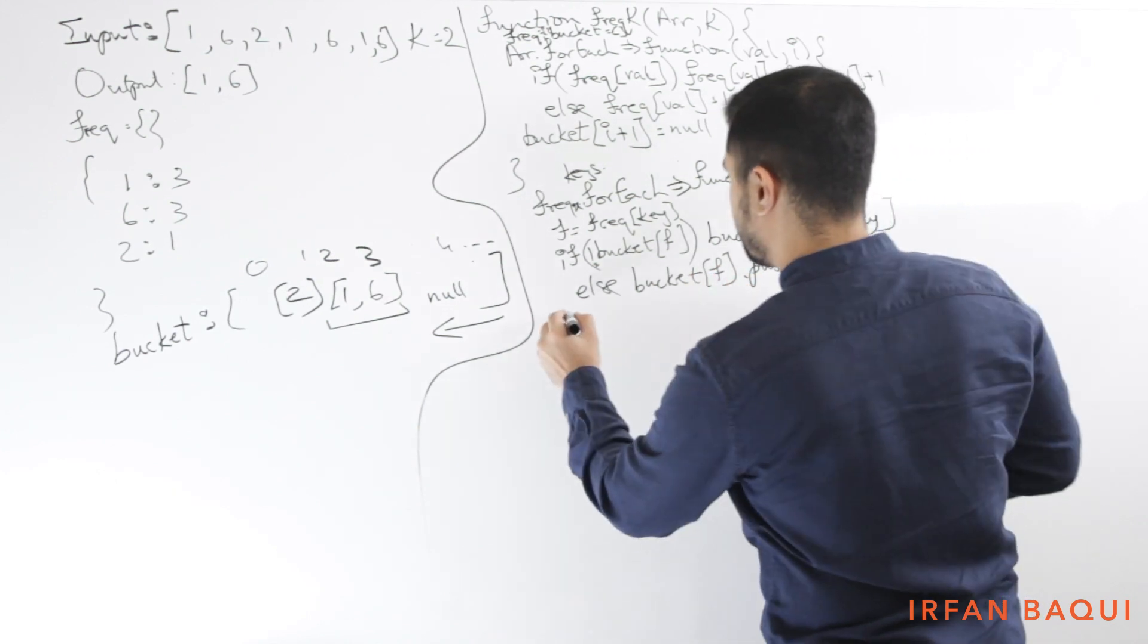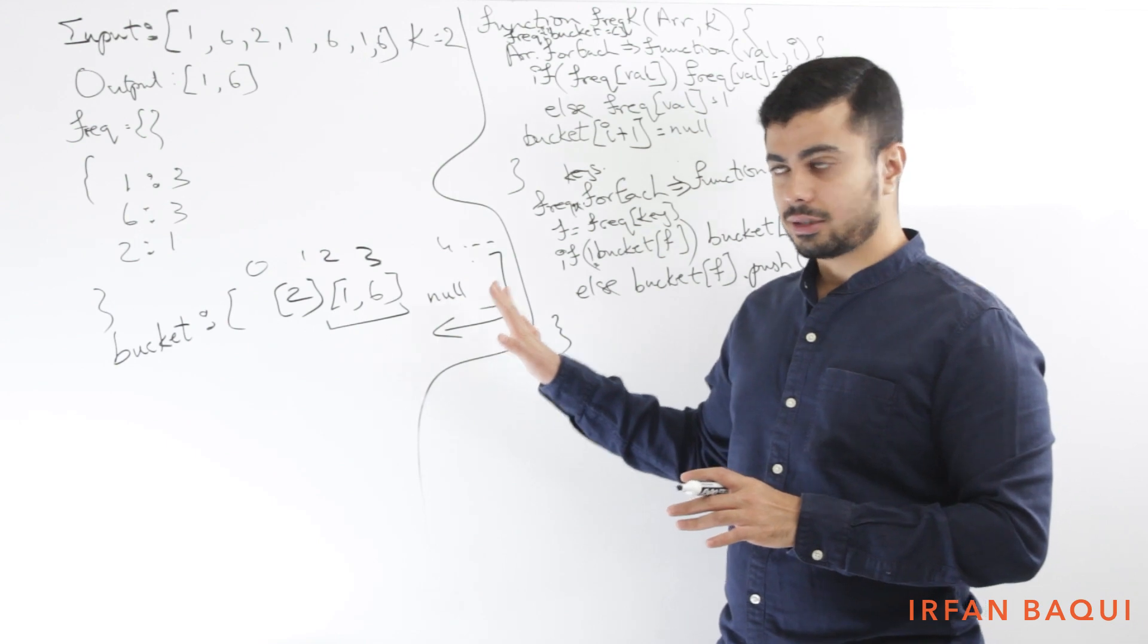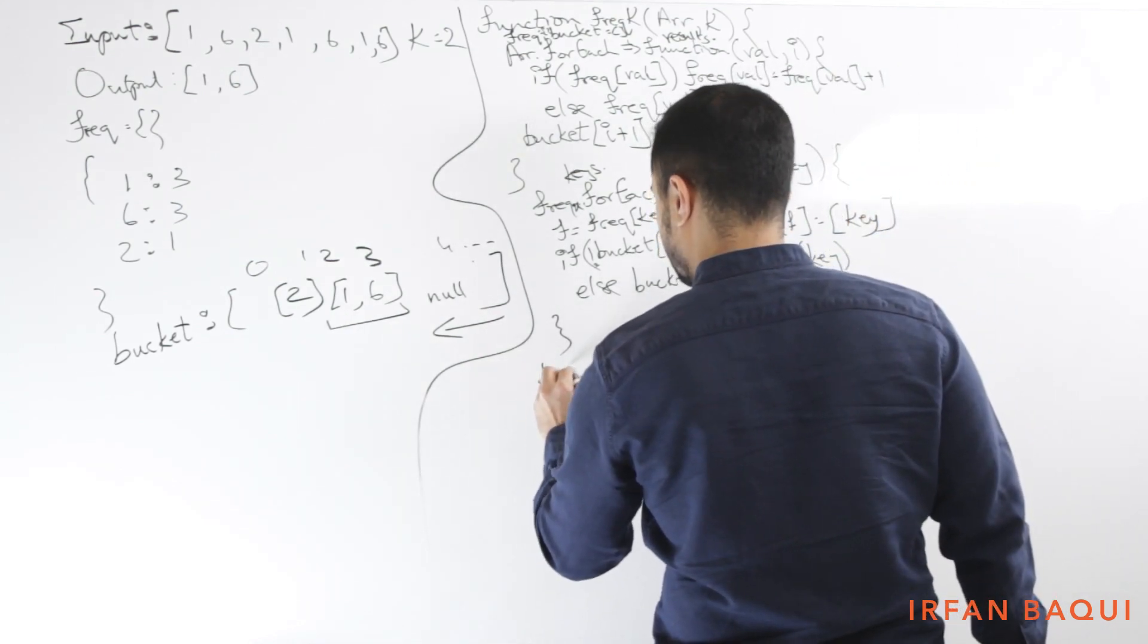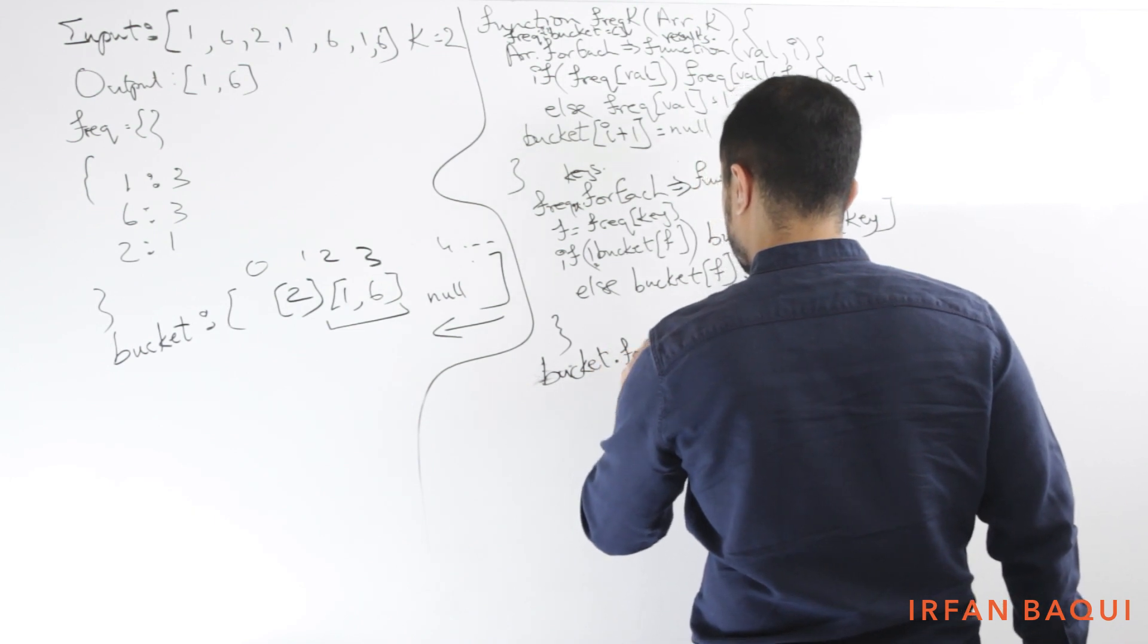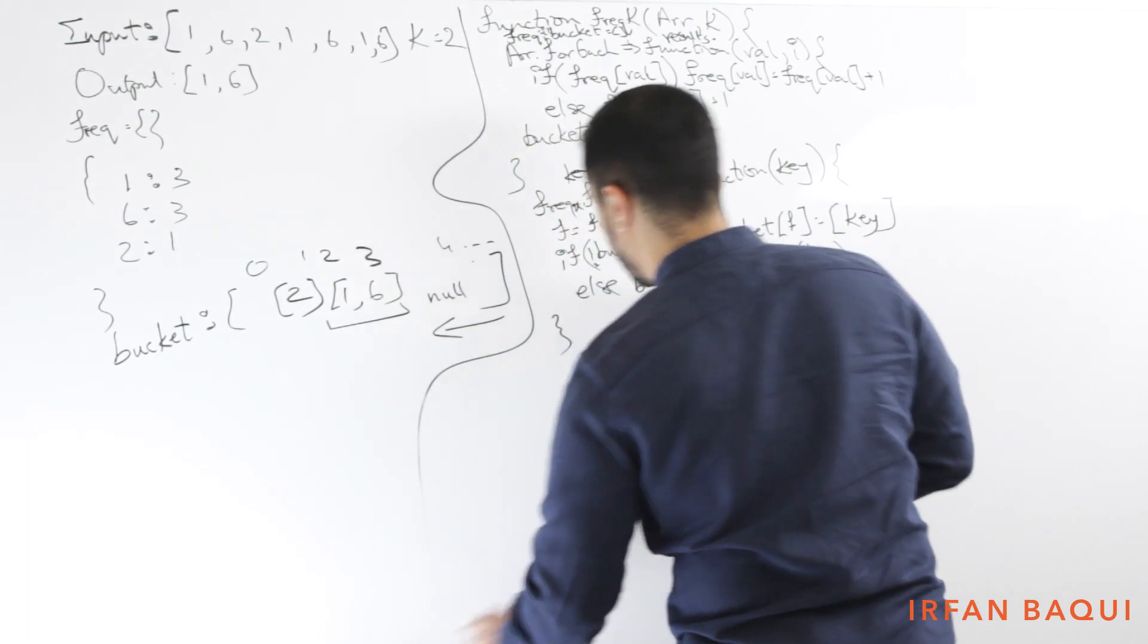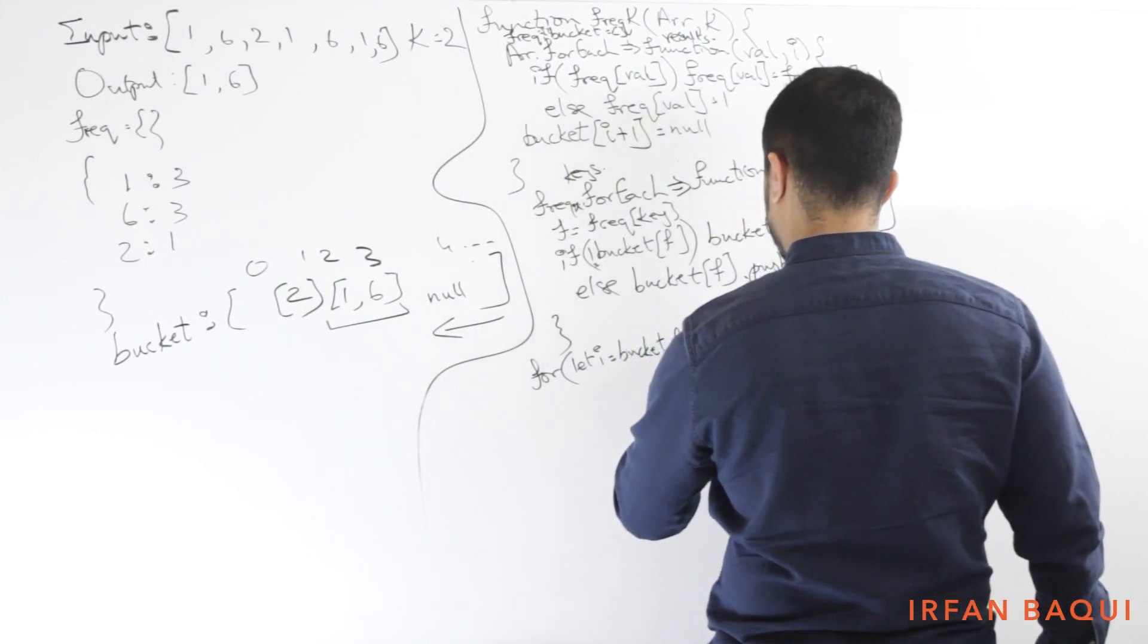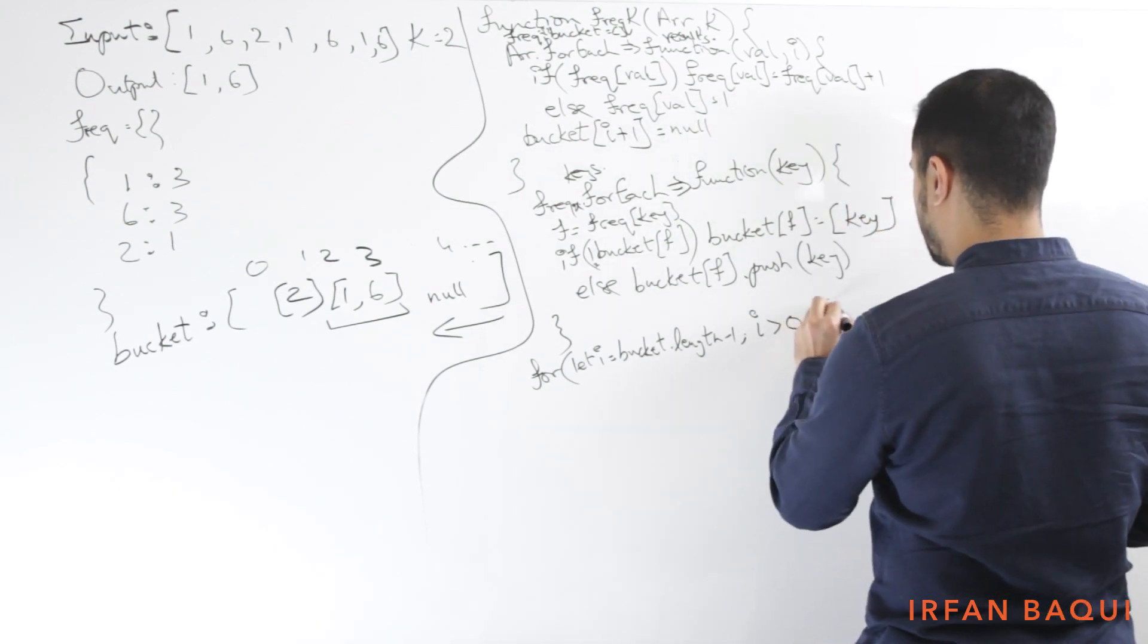So now at the end of this, I'll have this bucket. Now what I want to do is I want to iterate from the end of this bucket and populate my results array. Let's say I have results initialized in the global scope as well. So I'll say bucket, let me write bucket properly. Actually, I don't want bucket dot for each. I want to iterate from the end. So let me say, let me say I have a for loop. For let i equals bucket dot length minus one. I is greater than zero. I don't care about zero. And i minus minus.